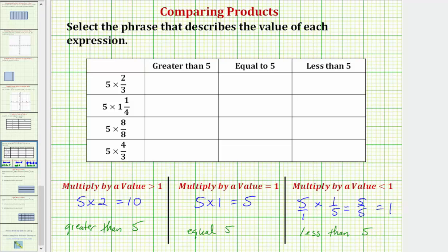So going back up to our table, the first product is five times two-thirds. So here we're multiplying five by a value that's less than one, and therefore this product will be less than five.